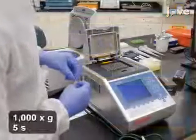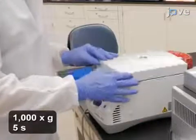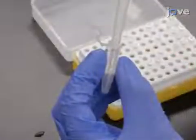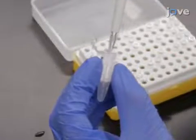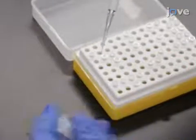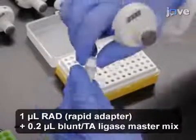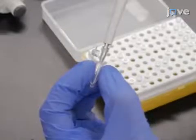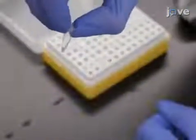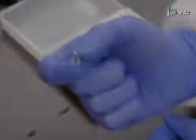Then, pulse-spin the tube again. To complete the adapted and tethered library, add 1 microliter of rapid adapter and 0.2 microliters of blunt TA ligase master mix. Then, use inversion to mix the tube.